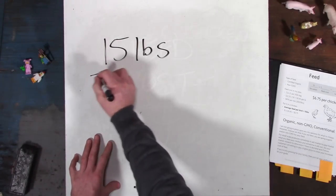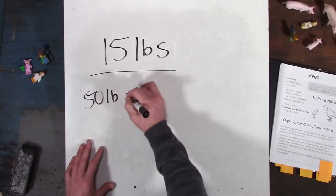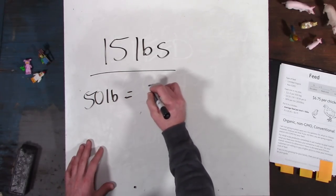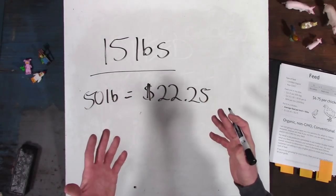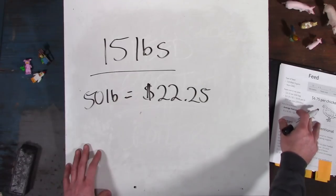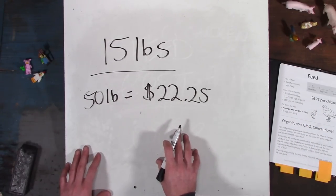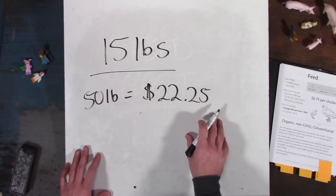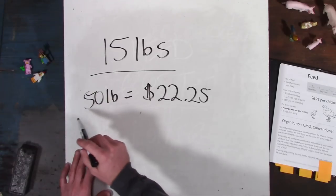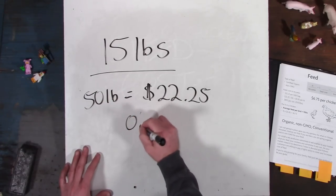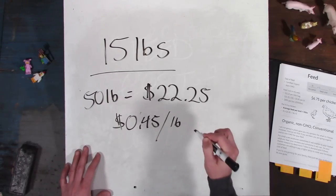So 15 pounds, I get my feed in 50 pound bags. So each 50 pound bag for me is $22 and 25 cents. And this will vary year to year. But again, that's the information I've published in my book. So we're going to go with that because that was the most accurate information at the time. So $22 and 25 cents for a 50 pound bag. If you divide $22.25 by 50, you're going to get 45 cents per pound. Bam.